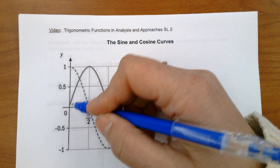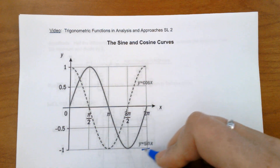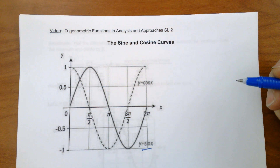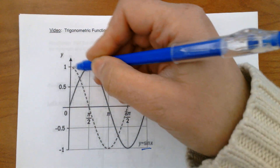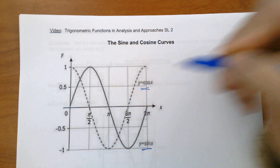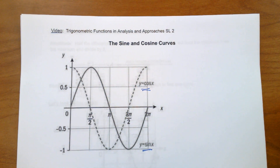The solid curve is our sine curve — that's y equals sine x. And our dotted curve is our cosine curve, which is y equals cosine x. Now let's look at some features.